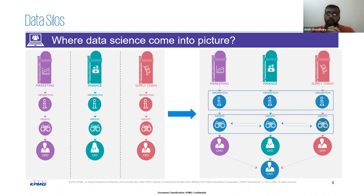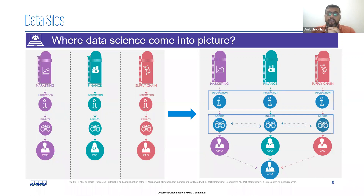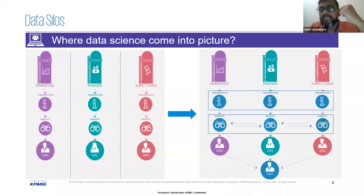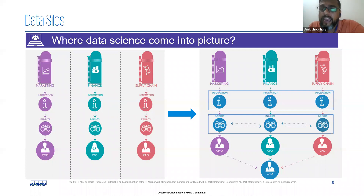That's why the third vertical — domain knowledge — is very important. You can't become a master of all domains, but you can become a master of two or three domains over a period of time. If you have no clue about a domain, you should also have adaptability and eagerness to work with the business leaders of that domain to understand it first, then start your analysis. These are the three pillars of any good data analytics skill set: technology, statistics, and domain knowledge. If you have all three in combination, you can definitely become a good data analytics person.